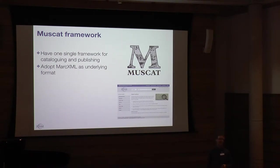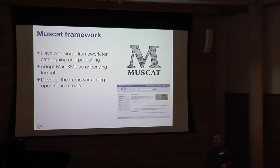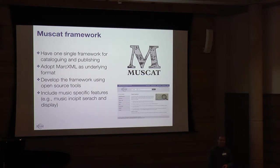The idea for Muscat was precisely to have one single framework to do both the cataloging and the publishing. At that time there were many different library formats and proprietary formats for this type of project. Using MARC XML was a consensus chosen also to enable data exchange with libraries. We wanted to use open source tools — it's a long-term project and we all know what happens when a tool is developed by a private company that one day is no longer here. Most importantly, we wanted specific features for music, including incipitd searching and incipitd display. The Verovio project, used by quite a few projects, was developed as part of this initiative.